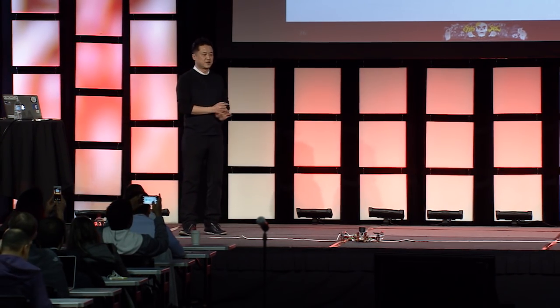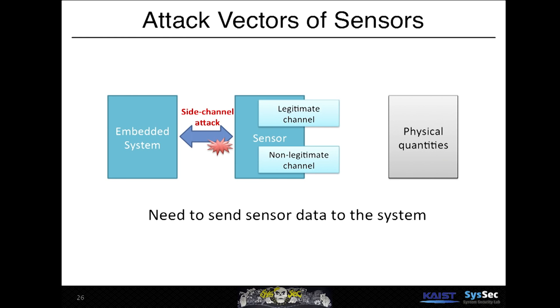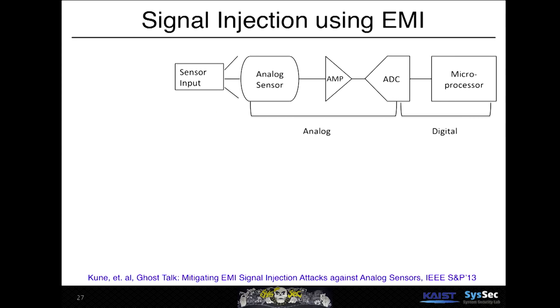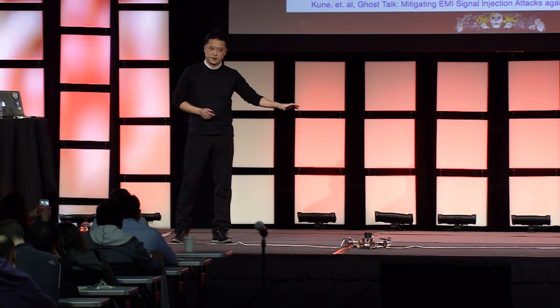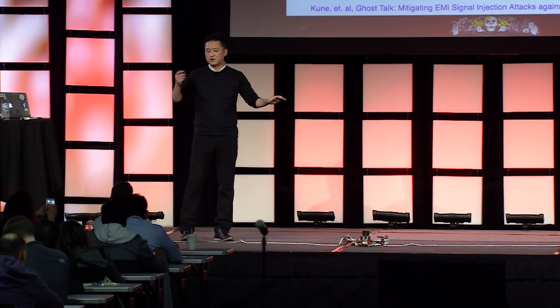The last attack is a side-channel attack between the sensor and the embedded system using the wire. In a typical sensing and actuation circuit, an analog sensor measures physical quantities, the output is sent to an amplifier, then digitized through an ADC, and the digital output is transferred to a microprocessor. Using theory from sophomore electrical engineering: if we know the length of the wire and the wavelength of an external signal satisfies a certain condition, then the wire can act as an antenna and we may inject a signal into it.